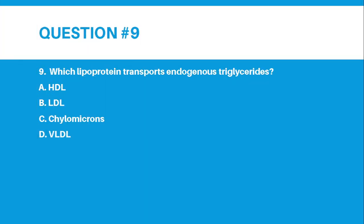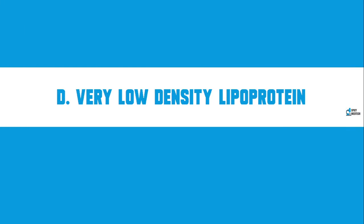Number 9. Which lipoprotein transports endogenous triglycerides? A. HDL, B. LDL, C. Chylomicron, or D. VLDL. The correct answer for number 9 is letter D — Very Low Density Lipoprotein, or VLDL.